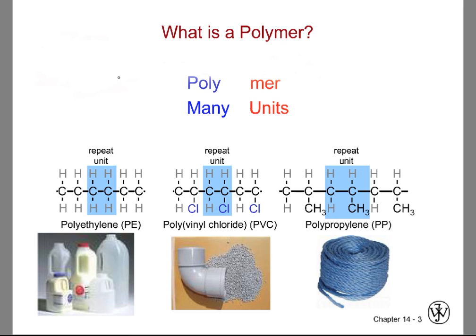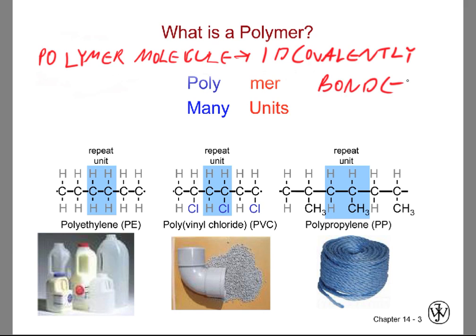What is a polymer? A polymer is a long chain of 1D covalently bonded molecules. The polymer molecule has this 1D covalently bonded chain.